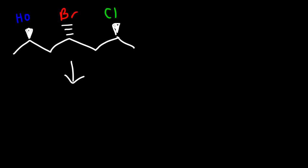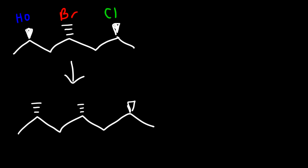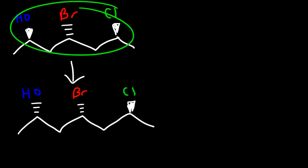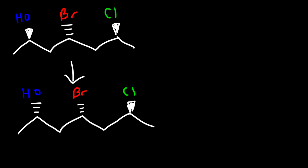So let's draw two diastereomers of the molecule on the page. I'm going to change the configuration of the OH group, and everything else will stay the same. These two are diastereomers. I could change one or two chiral centers at a time, but not all three. If I change all three, it could be an enantiomer or it could be a meso compound. If there was an internal line of symmetry, I would get a meso compound if I had two chiral centers and changed all of them.